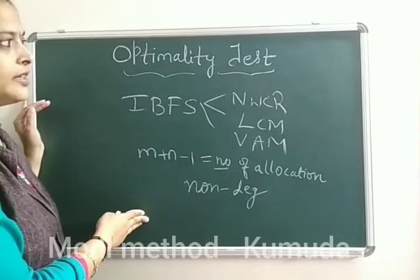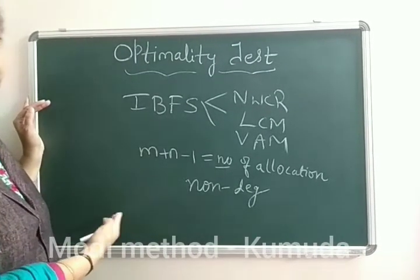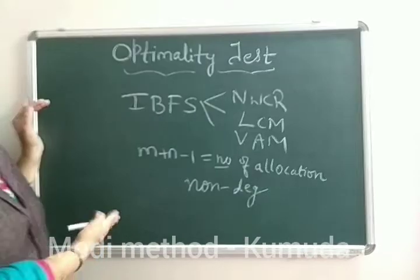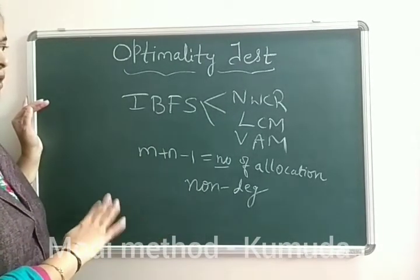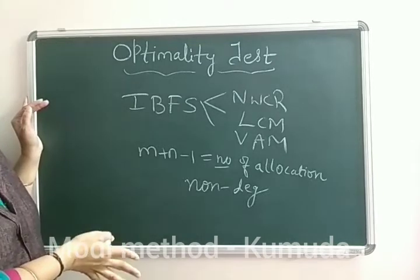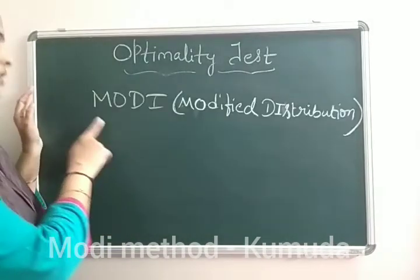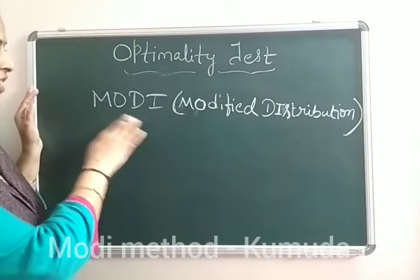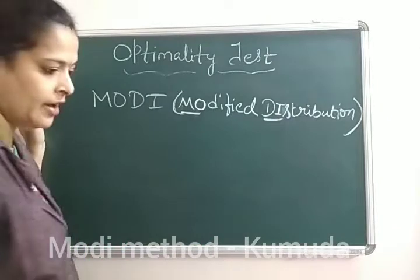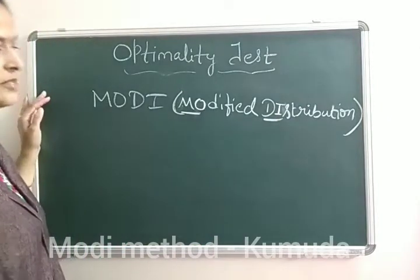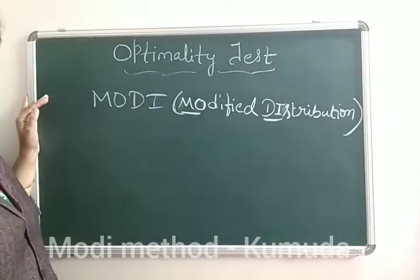The optimality test can be done using many methods, and one of the most famous is called the Modi method — short for Modified Distribution Method. We also have the Stepping Stone method. Today we will learn the Modi method. This method follows a few steps, and I will explain the steps first and then illustrate with an example.